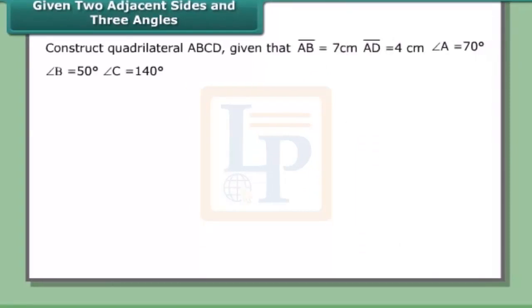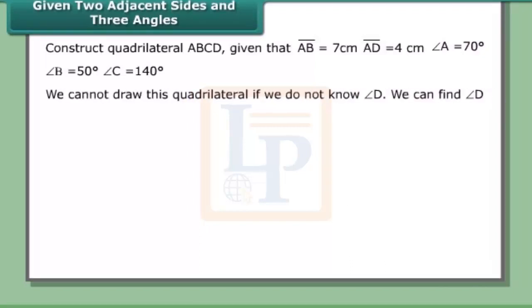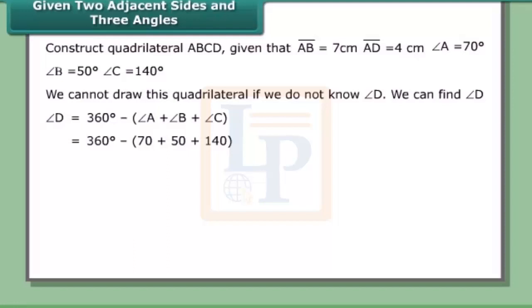Given two adjacent sides and three angles, construct quadrilateral ABCD given AB = 7 cm, AD = 4 cm, angle A = 70°, angle B = 50°, and angle C = 140°. We cannot draw this quadrilateral if we do not know angle D. We can find angle D: angle D = 360° − (angle A + angle B + angle C) = 360° − (70° + 50° + 140°) = 100°.